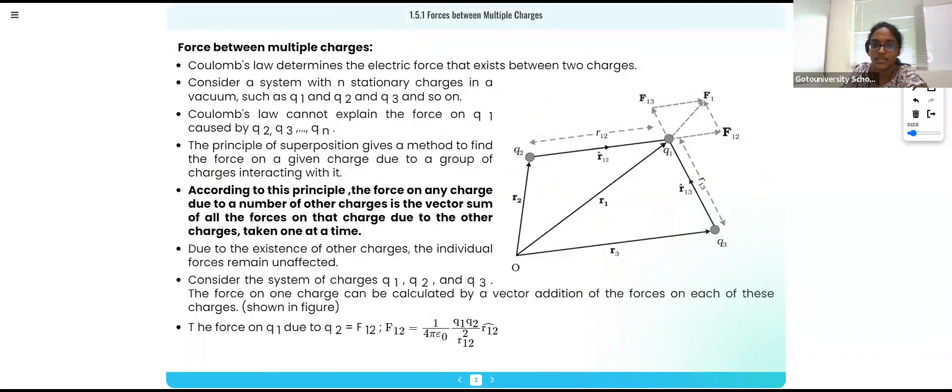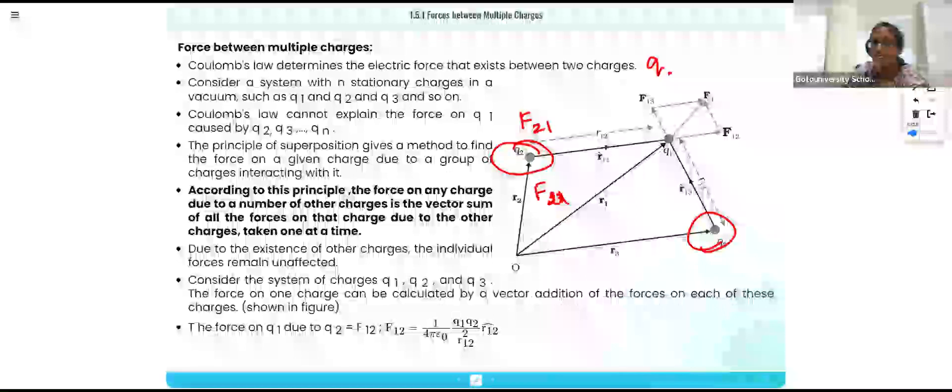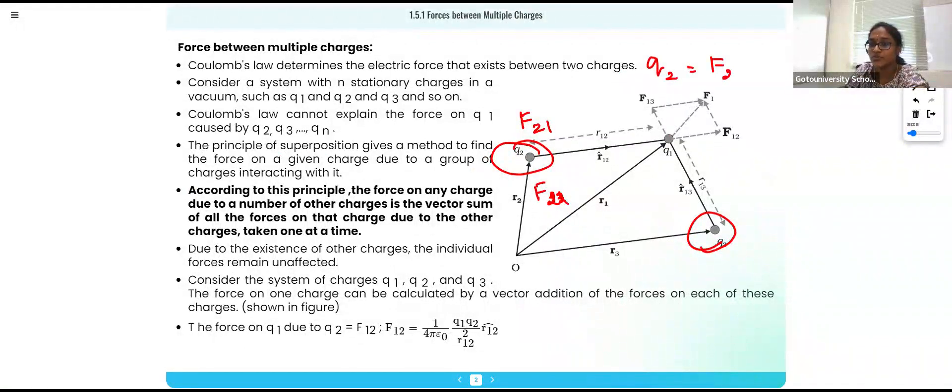So here I can write F2 because of one and because of this, F2 because of third one. So the total charge on Q2 can be written as the force of F21 and the force of F23, because of three, because of one. So totally we are calculating for each one and we are adding it.